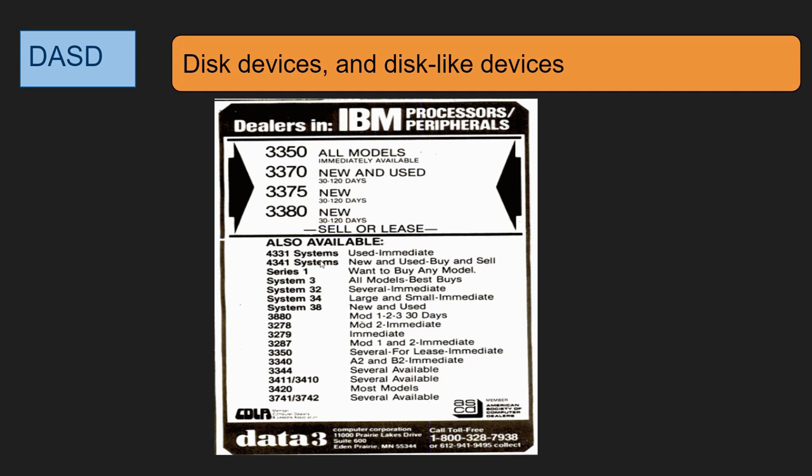What is the meaning of all those model numbers? To some extent people just take it for granted that they got better and faster. That's not the whole story. There is a story to tell about disk devices for the IBM mainframe, and I'm going to tell you that story today.